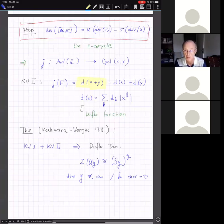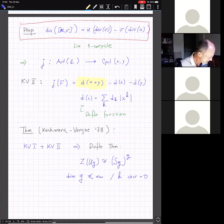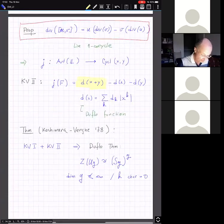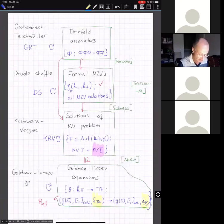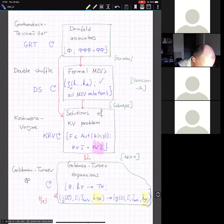Those groups, they are called the Grothendieck-Teichmüller group for Drinfeld associators, the double shuffle group for formal MZVs, the Kashiwara-Vergne groups for solutions of the KV problem, and Goldman-Turaev groups for Goldman-Turaev expansions. In fact, we already know that Kashiwara-Vergne groups and Goldman-Turaev groups are the same. So if you want, for now, we can stop distinguishing those problems, because they are simply equivalent.